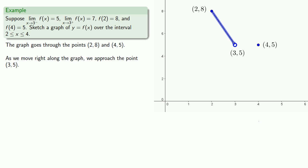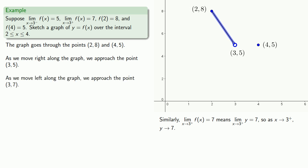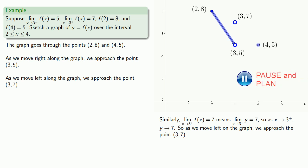Similarly, the limit as x approaches 3 from above of f of x equals 7 means the limit as x approaches 3 from above of y is equal to 7. So as x gets close to 3 but stays above it, y gets close to 7, and we approach the point (3, 7). Once again, we don't actually know whether there's a point there, so we'll draw an open circle to indicate no commitment over whether there is a point at that location. As we move left on the graph, we should be approaching this point (3, 7), and this is what our graph should look like.